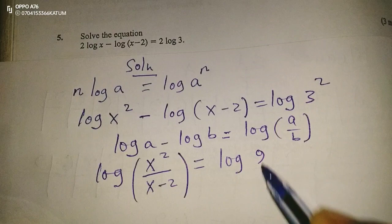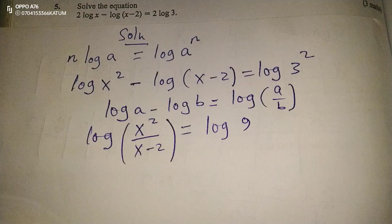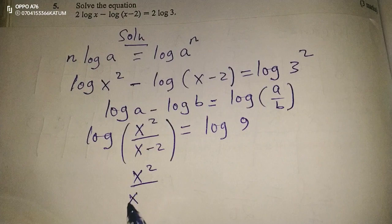So after applying all the laws of logarithms, now we can drop logs, then we equate both sides. x² divided by (x minus 2) equals 9.